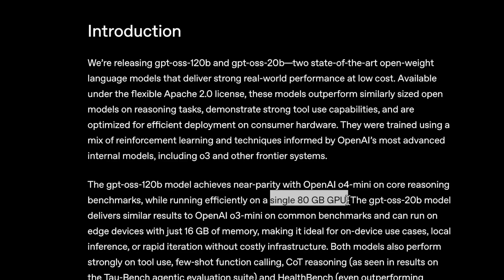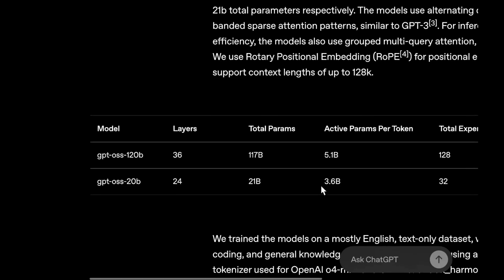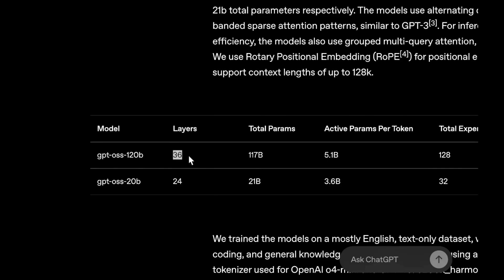The GPU they are talking about is the NVIDIA H100, or any GPU with 80 GB of RAM. Since it's an open source model, we have even more information about the architecture. The GPT OSS 120B model has 36 layers and the exact size is 117 billion total parameters.